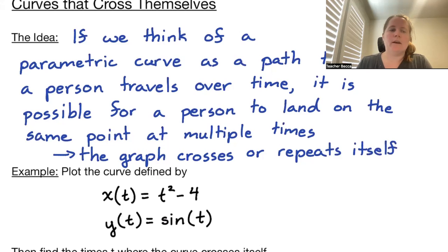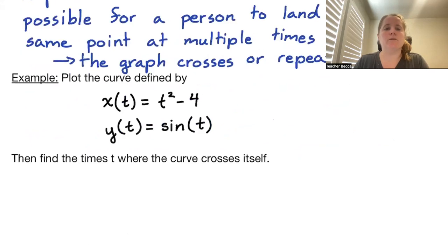So let's look at the curve defined by x(t) = t² - 4 and y(t) = sin(t). Our job is to find the times where the curve crosses itself.